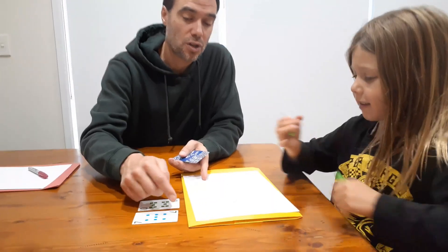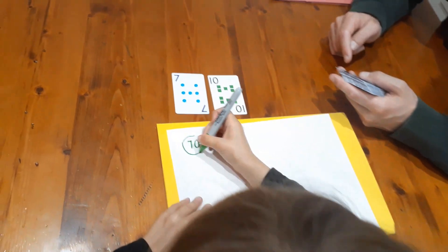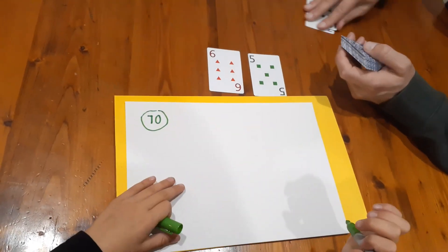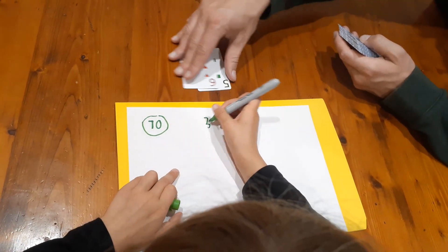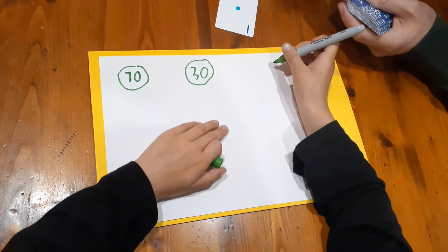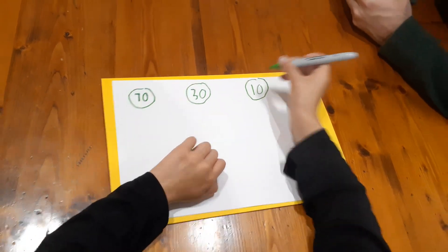Now to start with each player needs to have three target numbers on their sheet of paper and to generate them you're just going to flip over two cards and then Nasha you're going to write what the product of those numbers is. So seven ten gives us seventy. Beautiful Nasha. Six and five equals thirty. Yep and see how Nasha is spacing them out across the page which is perfect and one and ten. Okay so then Nasha's target numbers.